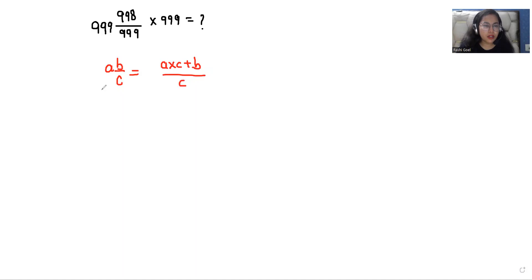So I am expressing this, where a is 999. So 999 times 999 plus 998 over 999 times 999. Now we can eliminate 999 and 999.